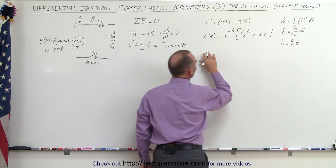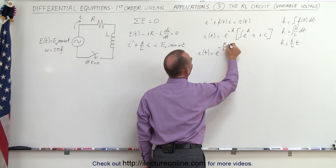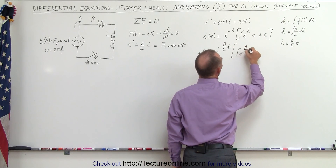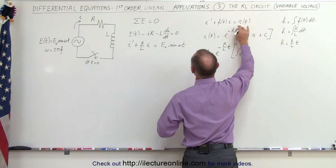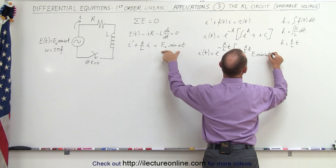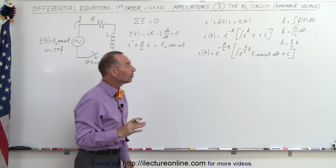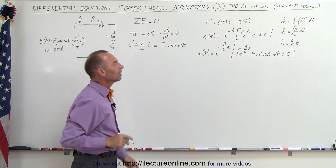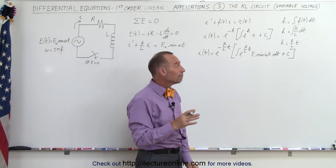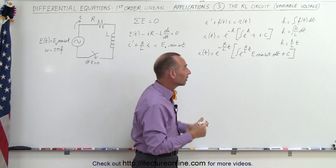That means the general solution can be written as I as a function of time equals E to the minus R over L times time, times the quantity the integral of E to the R over L times time, times E sub-naught times the sine of omega t dt, plus a constant of integration. This looks straightforward until we realize we must integrate E to the R over L times time multiplied by the sine of omega t, which can only be done by applying integration by parts twice.